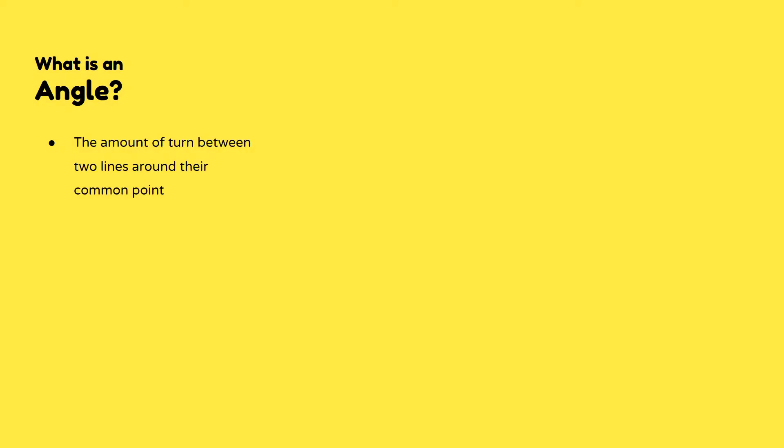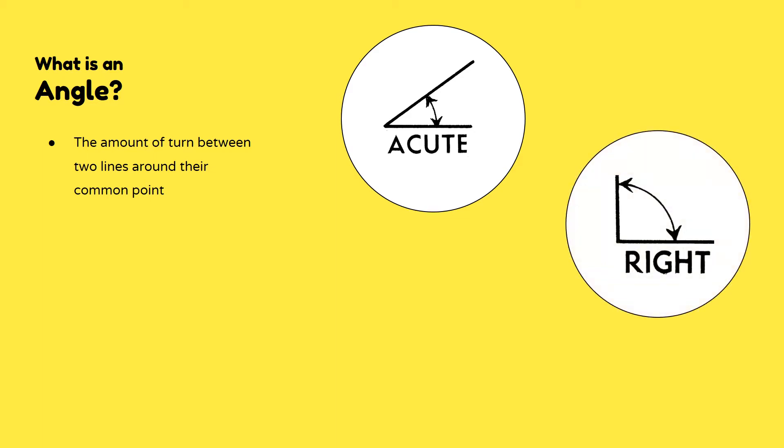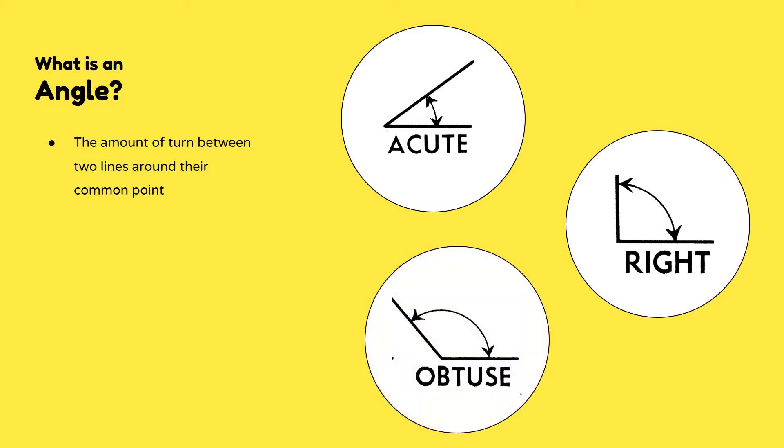The next way we can describe a geometric figure is by using its angle properties. An angle is the amount of turn between two lines around their common point. There are different types of angles. An acute angle is less than 90 degrees. A right angle is equal to 90 degrees. And an obtuse angle is greater than 90 degrees but less than 180 degrees. So we will be looking out for those properties as well.